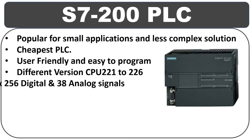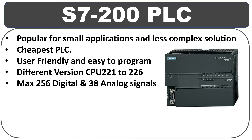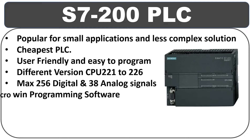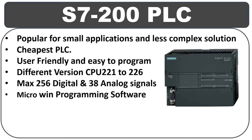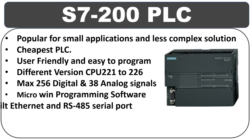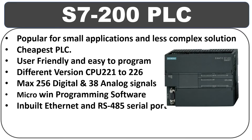The different CPU versions of the S7-200 PLC range from CPU-221 to CPU-226. The maximum I/O capacity is 256 for digital signals and 38 for analog signals. The programming software used for the S7-200 PLC is Micro/WIN, which is very easy to use. This PLC comes with one inbuilt Ethernet port and one RS485 port for serial communication.